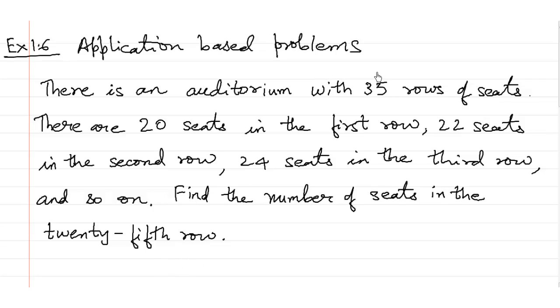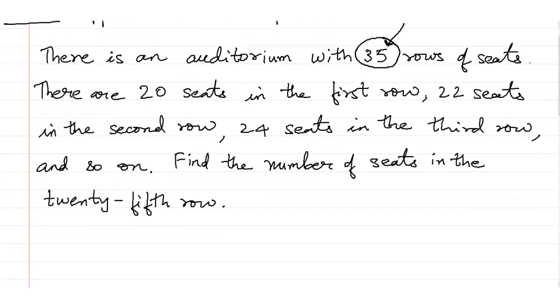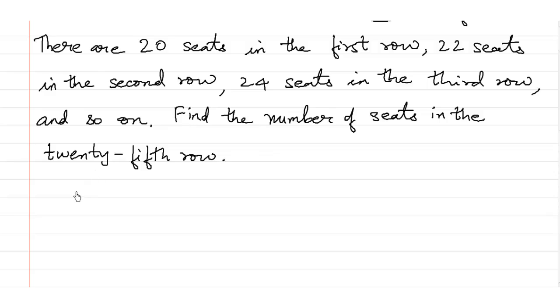Over here the auditorium has 35 rows of seats, but this number 35 has nothing to do with the actual question, so we shall ignore this. Let us say the first row has 20 seats, the second row has 22 seats, the third one has 24 seats and so on. So you need to find how many seats are there in the 25th row. In other words you need to find what is term number 25.